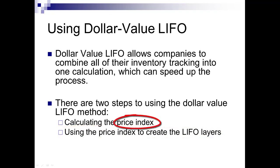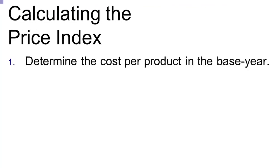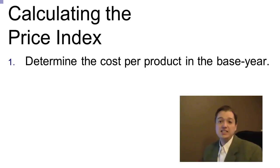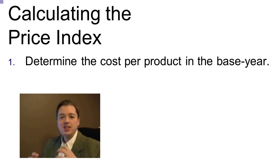Let's start by talking about this price index. There are four simple steps to making this price index calculation. First, we have to figure out the cost per product in the base year. The base year is the year that we decided to do dollar value LIFO. We're going to relate everything back to that base year so we can put it all on common ground. If we don't do that, then we're trying to compare this year's prices to last year's prices to two years ago prices to 20 years ago prices, and it gets really convoluted.